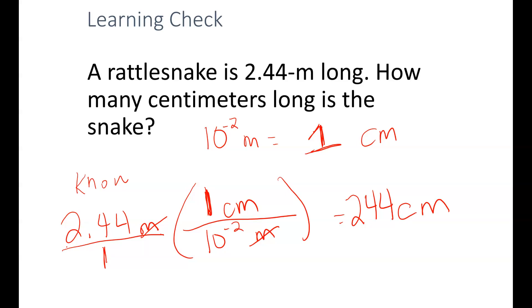Do make sure that you are lining up that we have 2.44 times 1 on the top. And we have 1 times 10 to the negative second on the bottom of your fraction. If you're not coming up with 244 centimeters, then this can sometimes be the issue. So do make sure that you have everything lined up. You're multiplying the top by the top, bottom by the bottom, and then divide those two values.